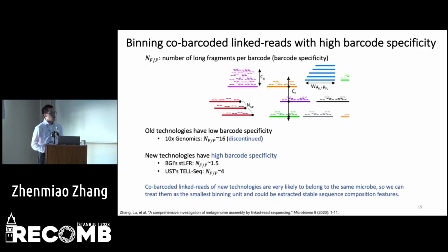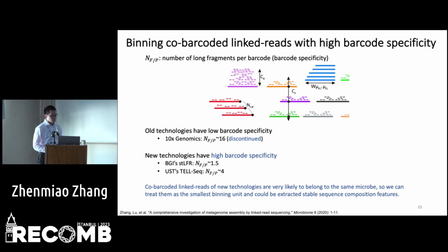So we developed our own method to bin co-barcoded linked reads with high barcode specificity. The reads sequenced from the same non-fragment share the same barcode, but a barcode can be shared among several non-fragments. If a barcode is shared by more non-fragments, the reads with the same barcode have a higher probability of coming from different microbes, meaning the linked-read technology has lower barcode specificity.